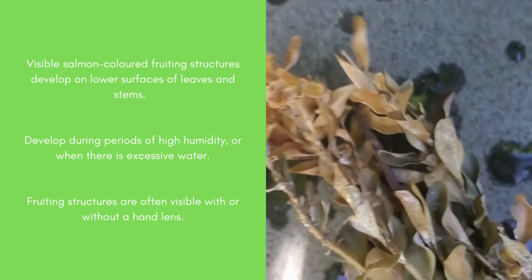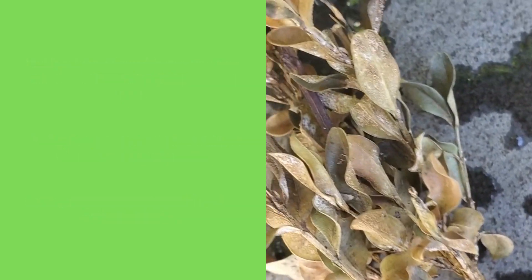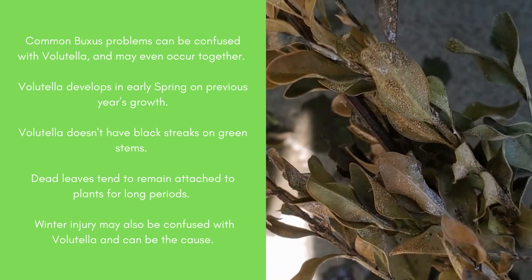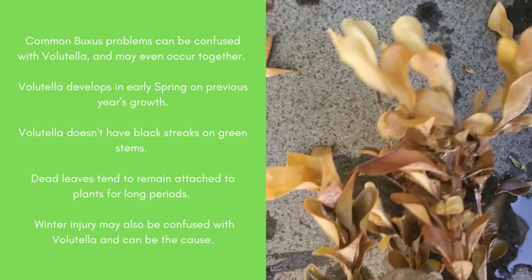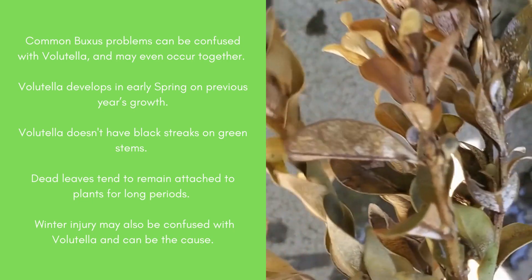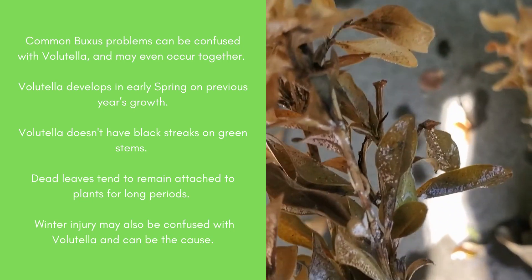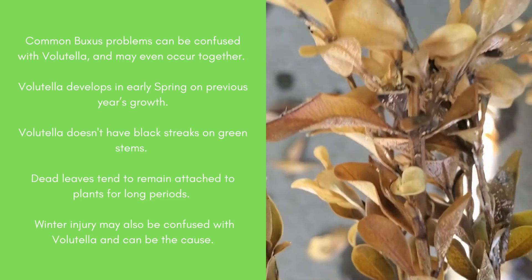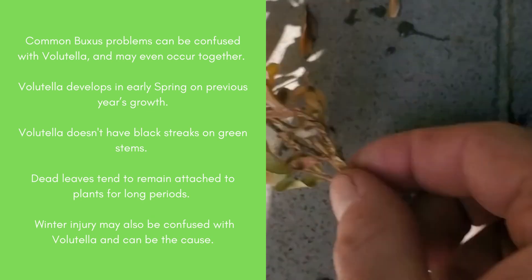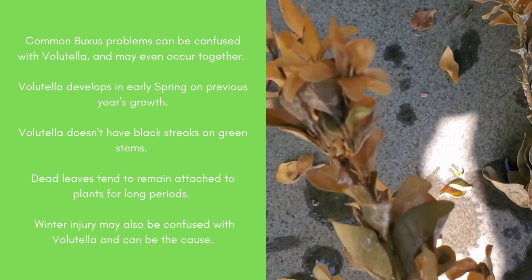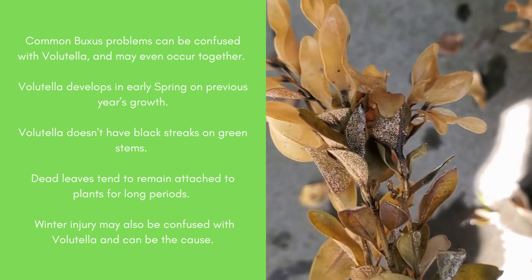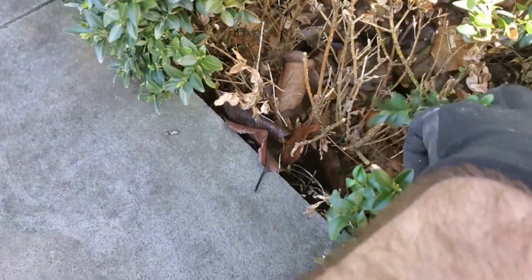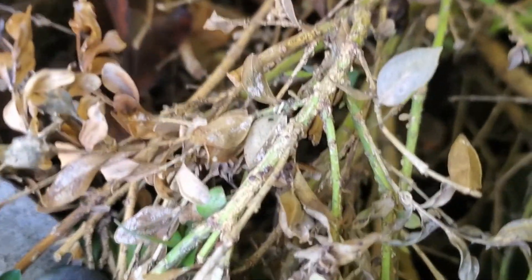Other common Buxus problems can be confused with Volutella Blight, and in some cases may even occur together. Volutella symptoms develop in early spring on previous year's growth before new growth begins. A distinguishing symptom of boxwood blight is the presence of black streaks along green stems, a symptom absent from Volutella. In addition, boxwood blight results in rapid defoliation while dead leaves tend to remain attached to plants for long periods when Volutella is the cause.